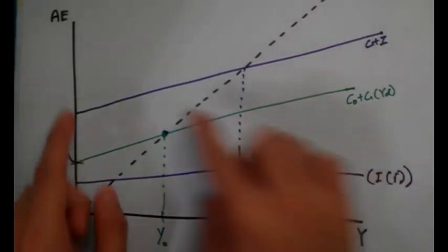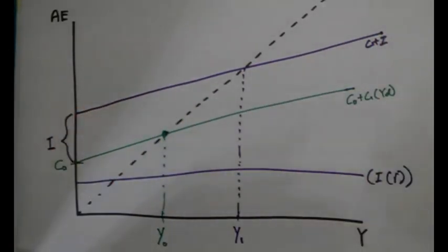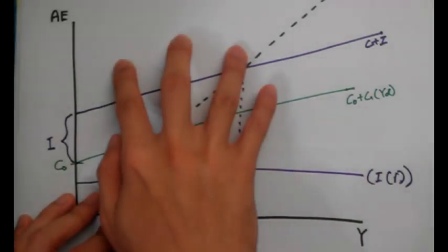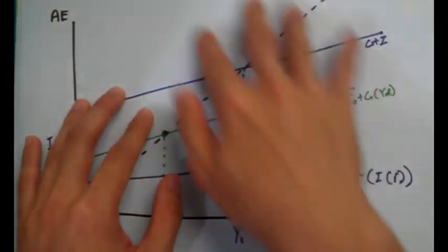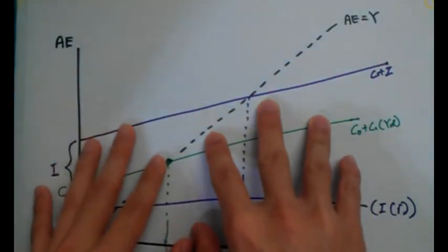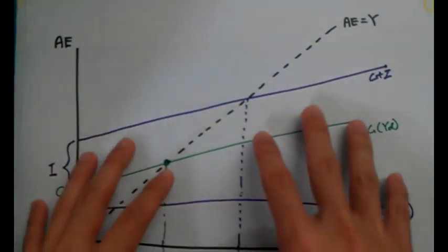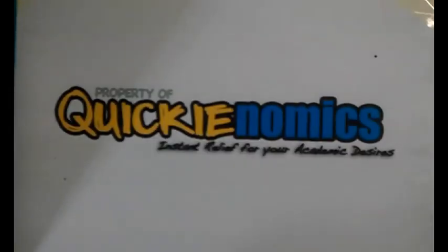As we increase consumption or expenditure, the AE curve will either shift upward or rotate to become steeper or flatter, depending on something called the multiplier, which we will be learning about in the subsequent videos. Thank you.